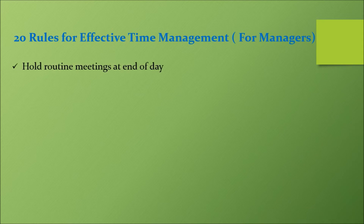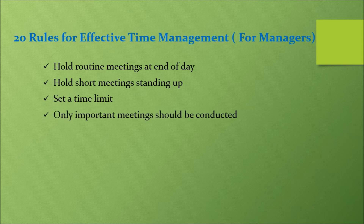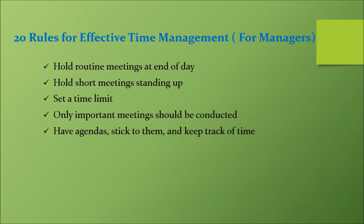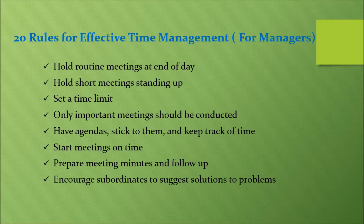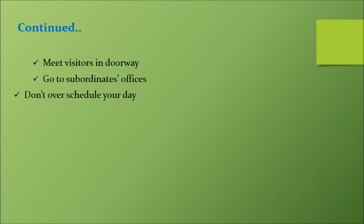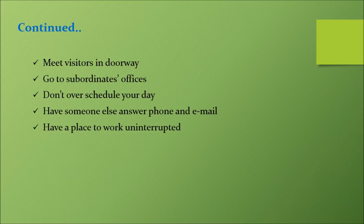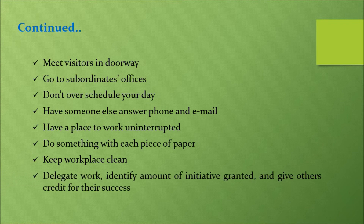Following are the 20 rules for effective time management for managers. Hold routine meetings at end of day. Hold short meetings standing up. Set a time limit. Go to subordinates' offices. Only important meetings should be conducted. Have agendas, stick to them, and keep track of time. Start meetings on time. Prepare meeting minutes and follow-up. Encourage subordinates to suggest solutions to problems. Meet visitors in doorway. Don't over-schedule your day. Have someone else answer phone and email. Have a place to work uninterrupted. Do something with each piece of paper. Keep workplace clean. Delegate work, identify amount of initiative granted, and give others credit for their success.